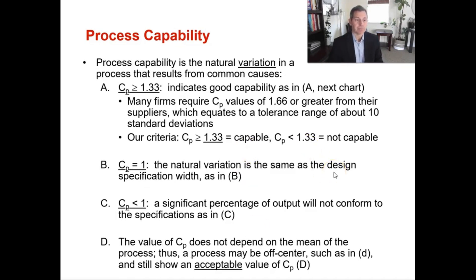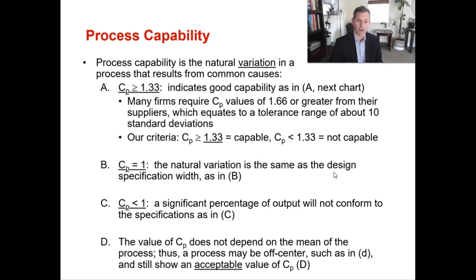Process capability is the natural variation in a process that results from common causes. A process capability (CP) of greater than 1.33 indicates good capability. Many firms require a process capability value of 1.66 or greater, which is essentially the same tolerance range as about 10 standard deviations. For this course, anything above 1.33 is a capable process. If you can get your CP up to 2, that would be a six sigma level of quality.